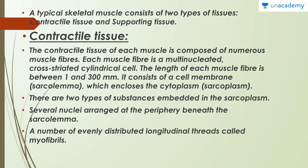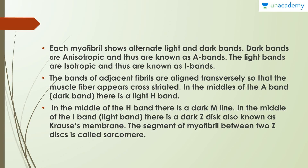Each muscle fiber is a multi-nucleated, cross-striated cylindrical cell, and the length of each muscle fiber is between one and three hundred millimeters. It consists of a cell membrane called the sarcolemma and encloses the cytoplasm known as the sarcoplasm. Several nuclei are arranged at the periphery beneath the sarcolemma, and a number of evenly distributed longitudinal threads called myofibrils are involved.